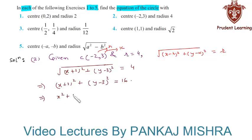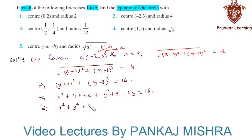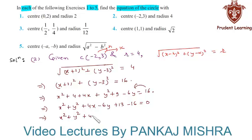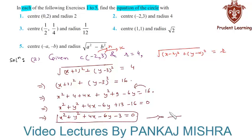Expanding: (x plus 2) whole square is x square plus 4 plus 4x, and (y minus 3) whole square is y square plus 9 minus 6y, equal to 16. This implies x square plus y square plus 4x minus 6y plus 13, and bringing 16 to the left-hand side gives minus 16 equal to 0, so finally x square plus y square plus 4x minus 6y minus 3 equal to 0. This completes our solution.